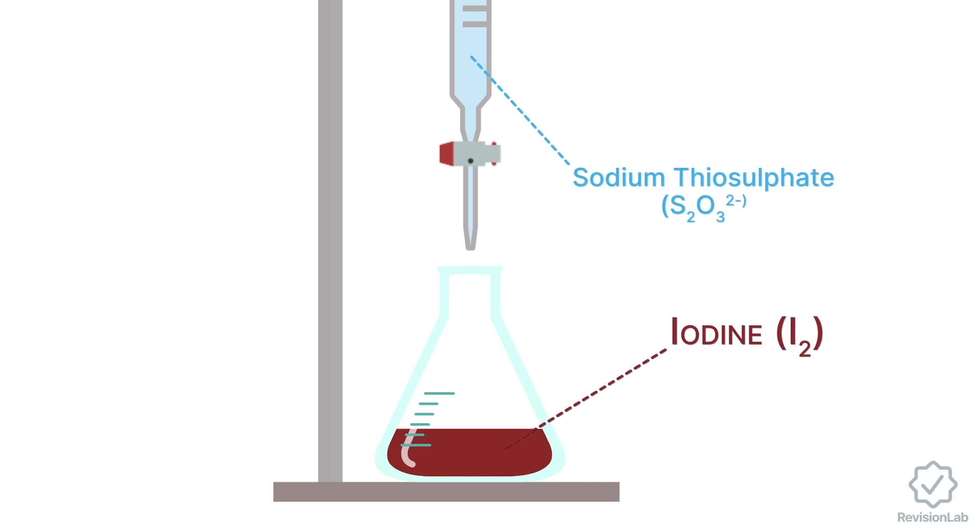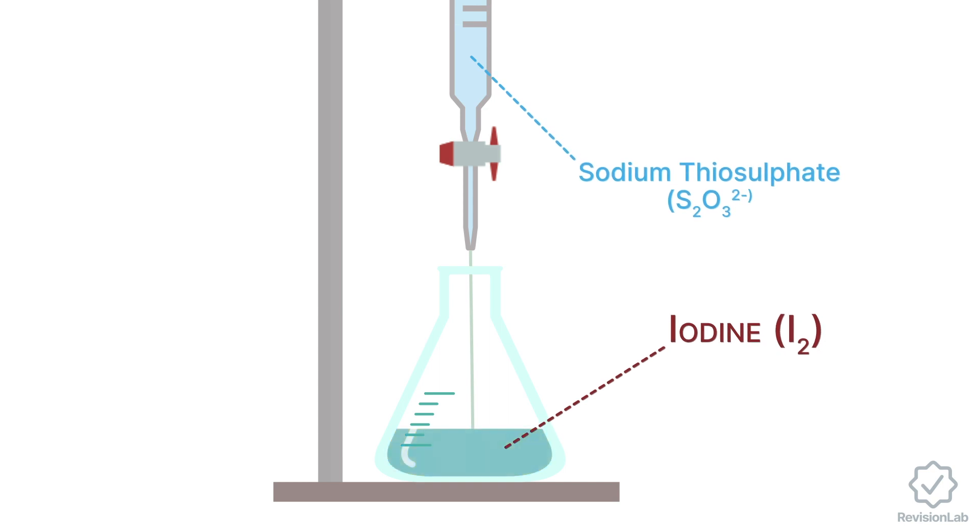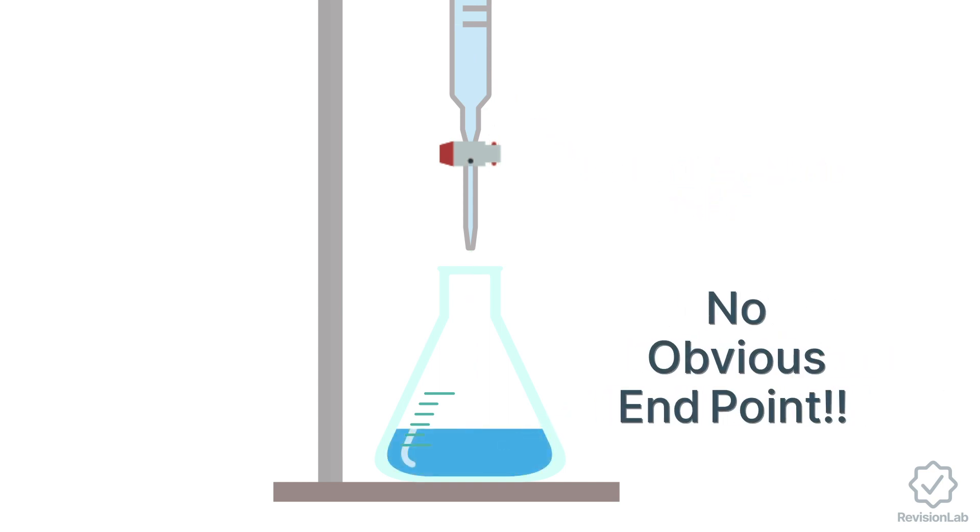In titrations involving iodine, however, we have the problem in that the change in color fades so gradually through red and yellow that we cannot accurately recognize the endpoint of the titration.